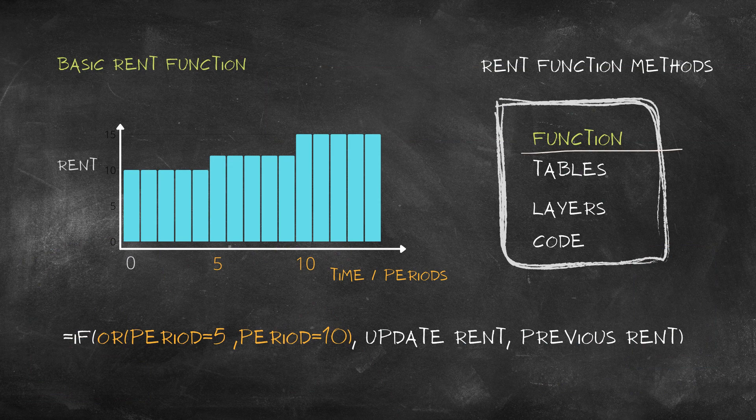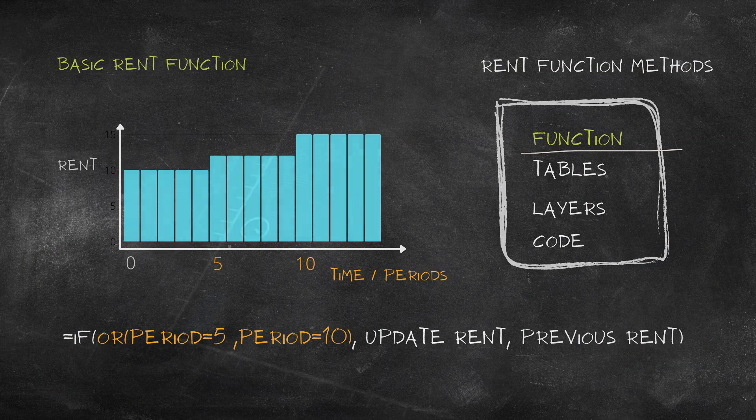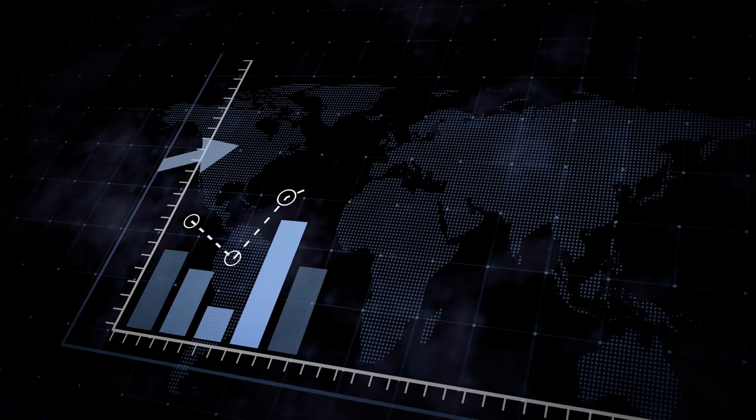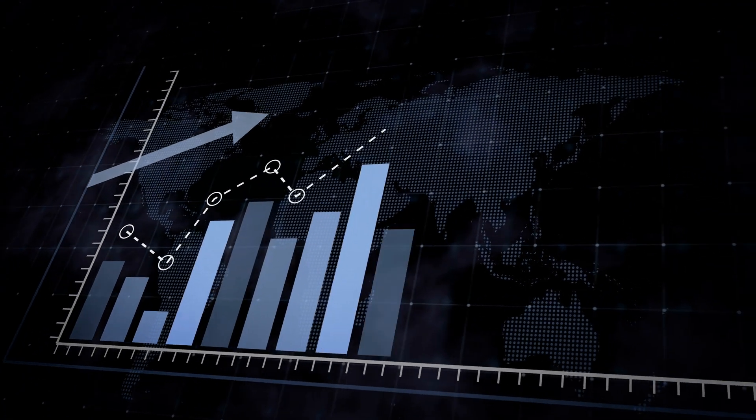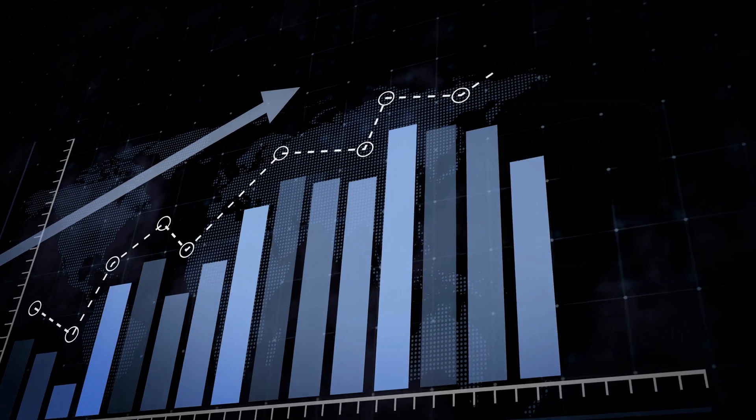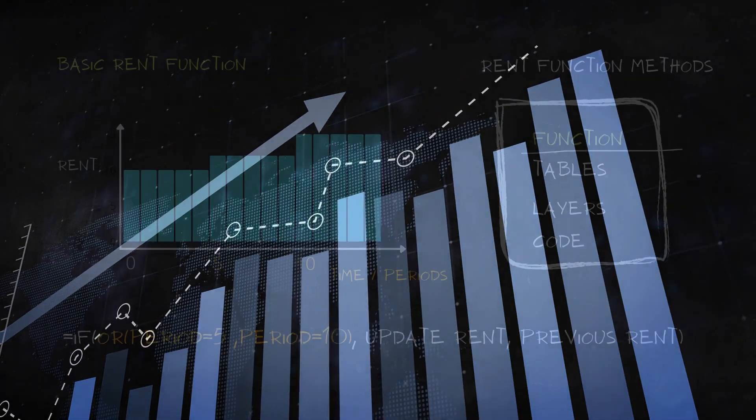A rent function is the formula used to project rent in a real estate asset cash flow. There are lots of things that can happen to rent over the life of the investment, making rent functions more complex than other types of income projection.